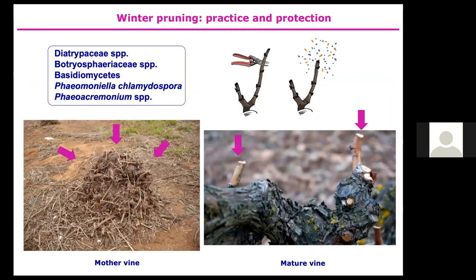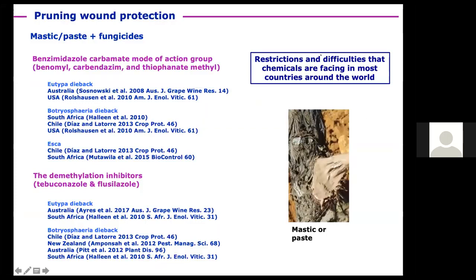Winter pruning is the main point of entry of GTD pathogens into the vine, so pruning wound protection is essential to keep plants healthy. Nowadays we have strong restrictions on the use of chemicals to protect pruning wounds. Mastics and paints are the most reliable wood protectants, particularly when supplemented with fungicides such as benzimidazole carbonate or demethylation inhibitors. These fungicides can provide a physical barrier to stop GTD pathogen spores from entering the vine and can also act on the pathogens if the physical barrier is compromised by sap flow, drain, or cracking when drying.